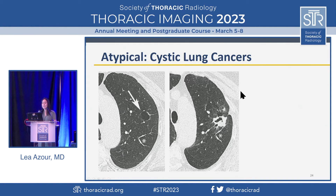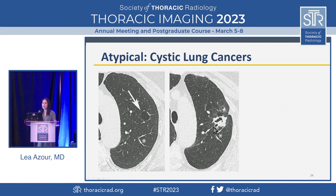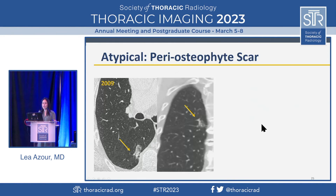Cystic lung cancers. If I saw the right-hand image in isolation, I would have thought this was a cavitating lung cancer. But this actually began as a unilocular cystic lesion. As it progressed, it increased in complexity, size, ground glass, and solid soft tissue, with vessels pulled in toward it. Another case of lung adenocarcinoma.